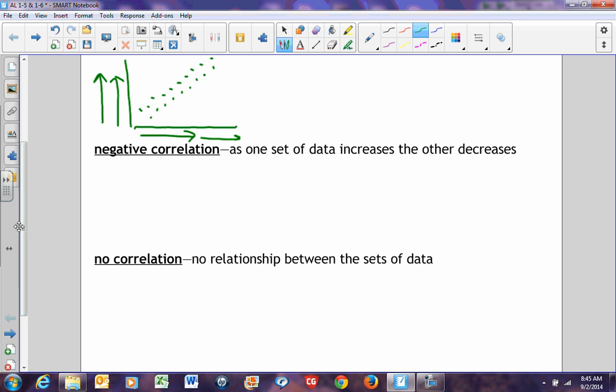A negative correlation says as one set of data increases, the other decreases. An example of a negative correlation would look something like this. As one set of data increases, the other set of data decreases. A good example is the more miles I drive, the less gas is in my tank. Or the more miles I drive, the less miles it takes to get to my destination. So it's a negative correlation.